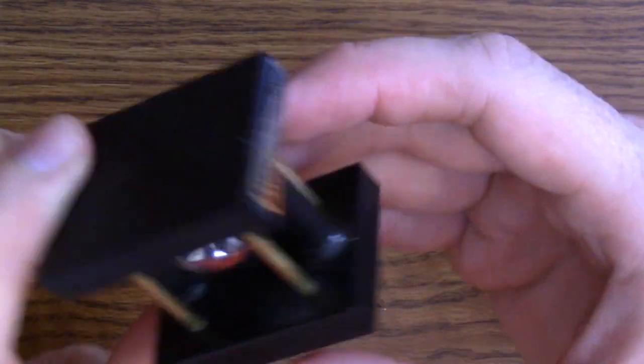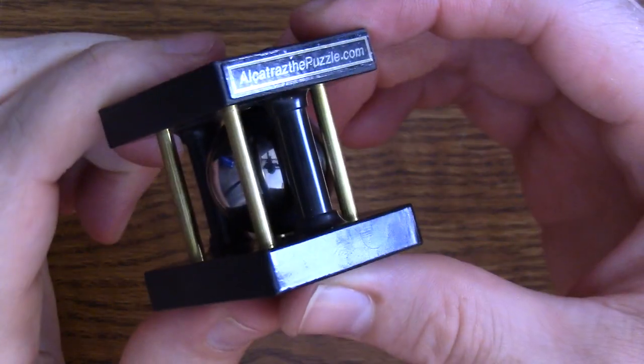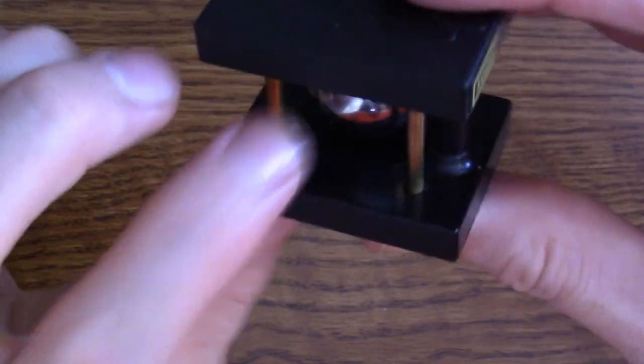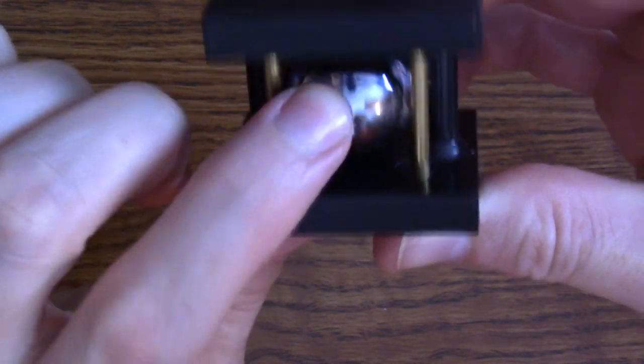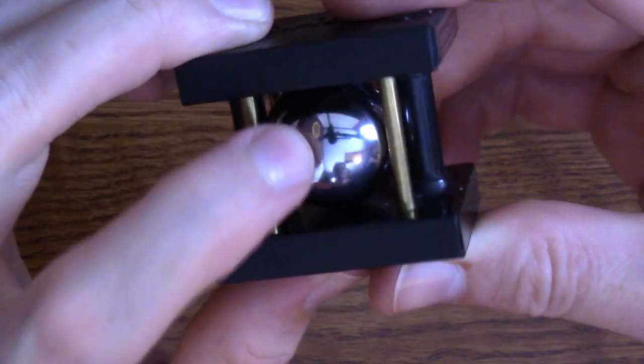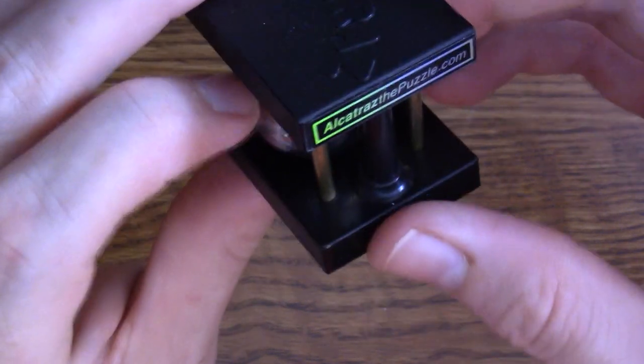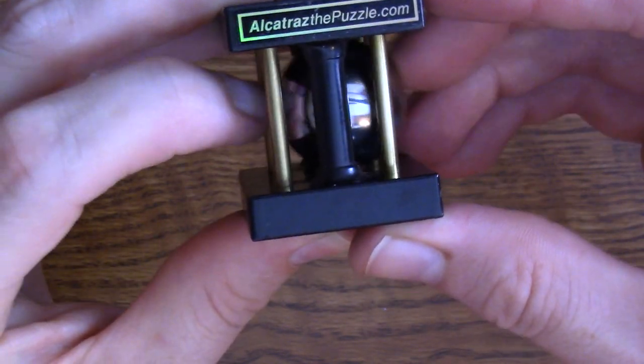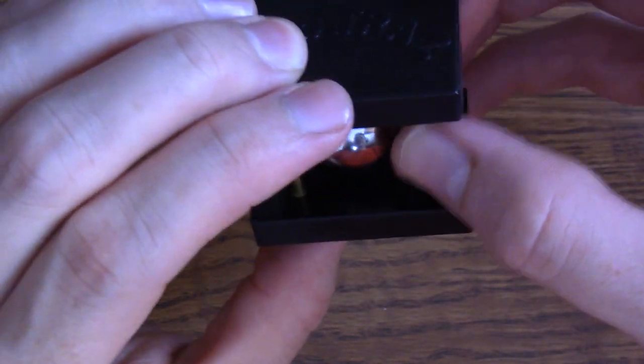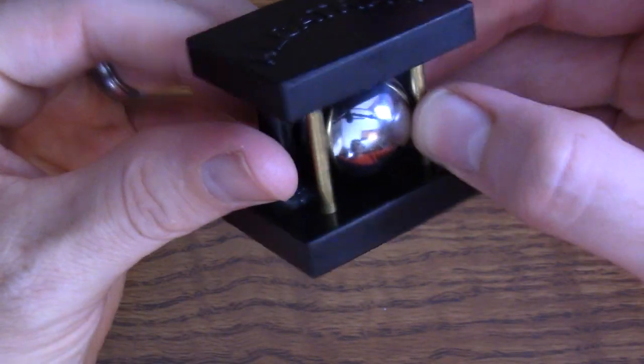So this puzzle has a rather large marble stuck in this prison and it can just barely fit side to side like this. So there's obviously something that needs to happen for it to come out.